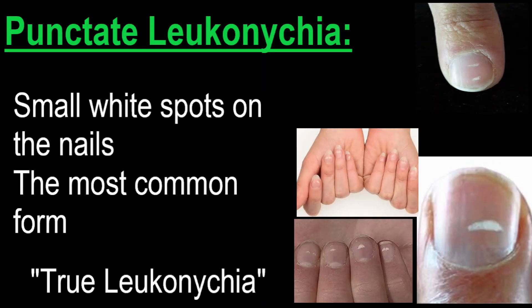The first subtype is punctate leukonychia, also known as true leukonychia. It is the most common form of leukonychia and it's characterized by the appearance of small white spots on the nail.